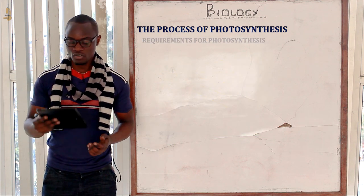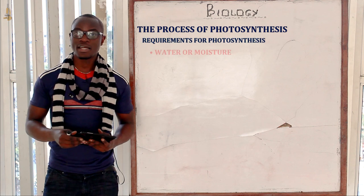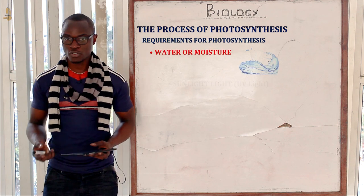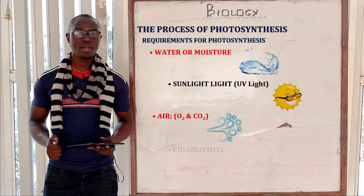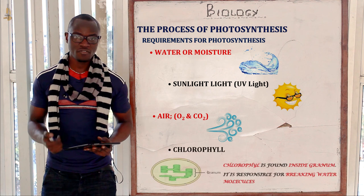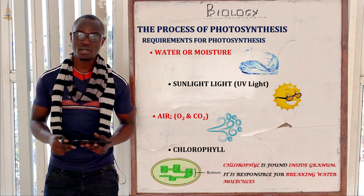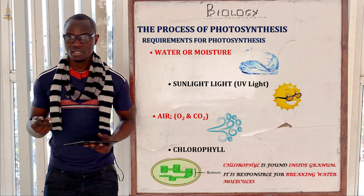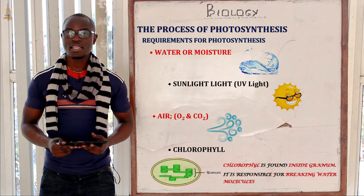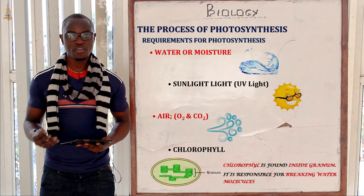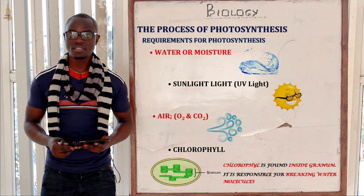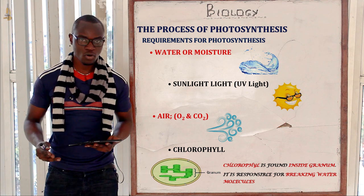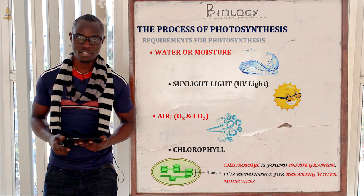Let's begin first of all by looking at the requirements for photosynthesis. The requirements of photosynthesis: we have light, we have water, we have temperature, and finally we have chlorophyll. So these are the basic requirements for photosynthesis.